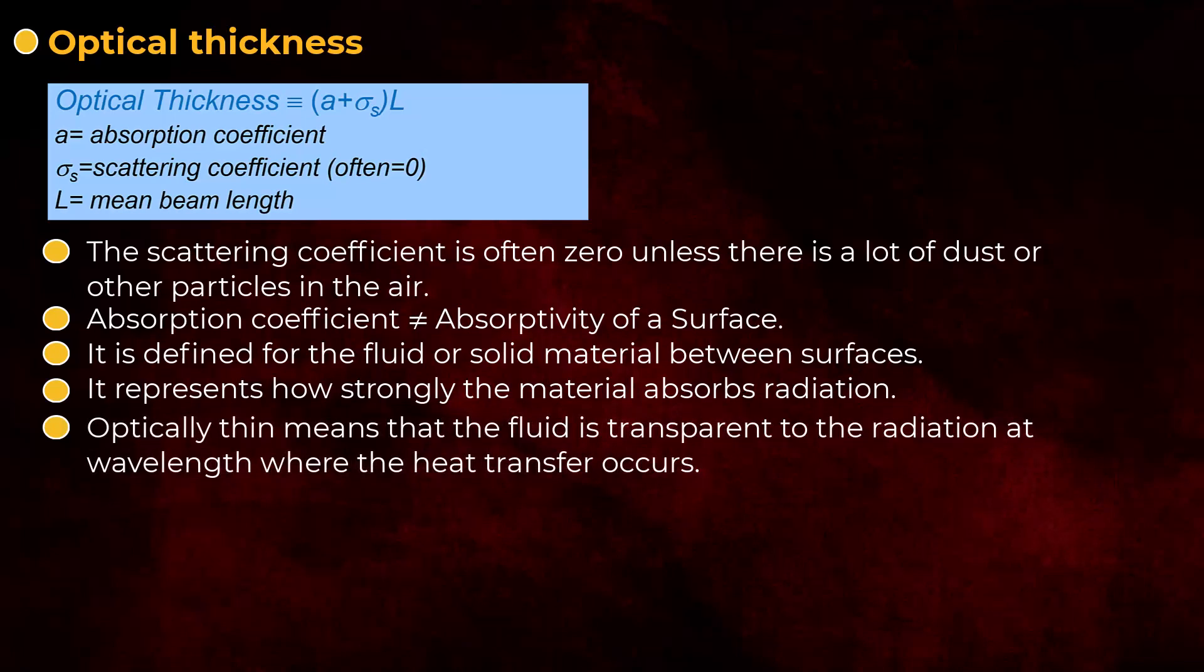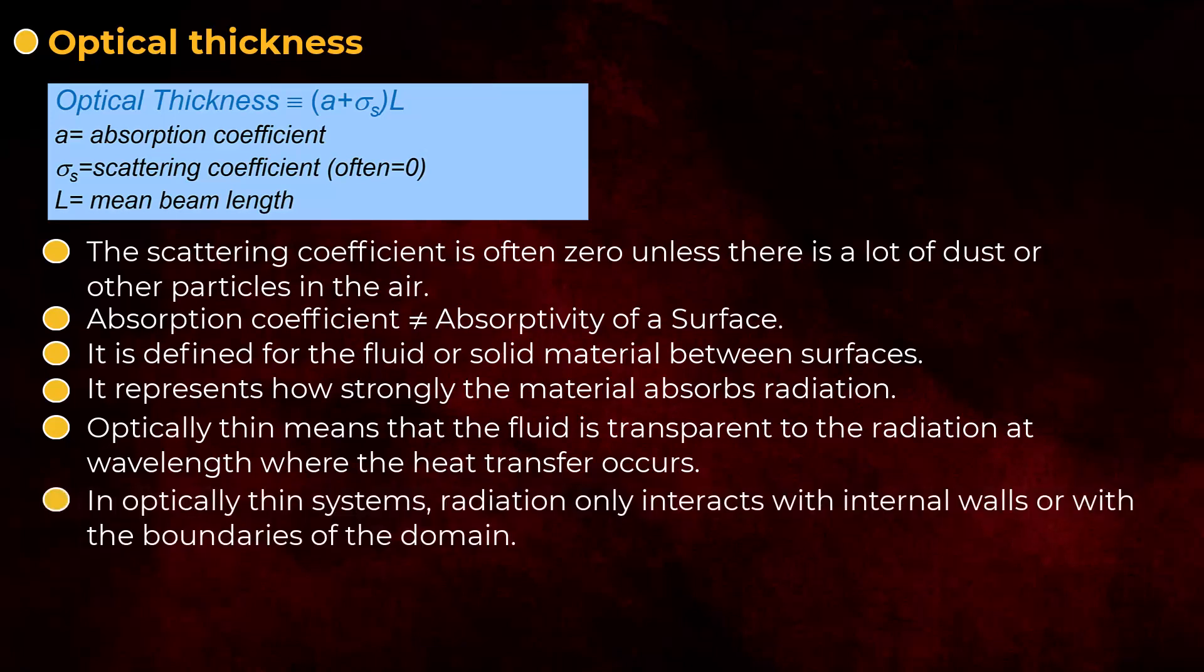A fluid is considered to be optically thin when it does not absorb significant radiation at the wavelengths where heat transfer occurs. In optically thin systems, radiation only interacts with internal walls or with the boundaries of the domain. Air is a good example of an optically thin fluid.